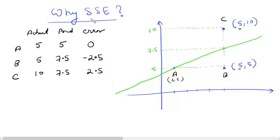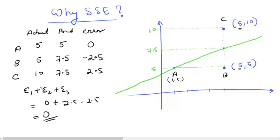Now, to answer why we minimize sum of squared error and not directly the sum of errors: the sum of errors here is e1 + e2 + e3 = 0. But that does not mean the line is making zero error. One error is negative and the other is positive and they are equal, so they cancel out. This is why we don't minimize the sum of errors directly — we first square them to get rid of the sign.